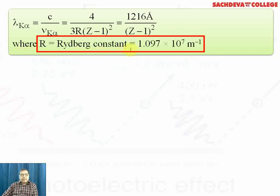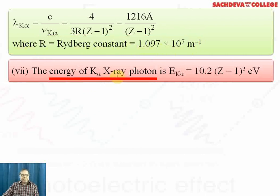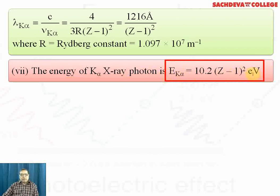R is the Rydberg constant and its value is 1.097×10⁷ per meter. The energy of K alpha X-ray photon is E_Kα = 10.2(Z-1)² electron volts. Energy calculated in Joules should be converted to electron volts using 1 eV = 1.6×10⁻¹⁹ Joules.